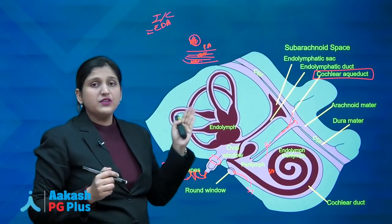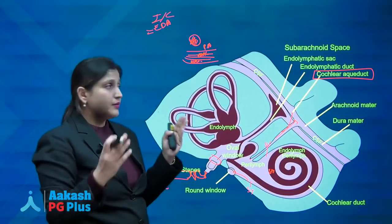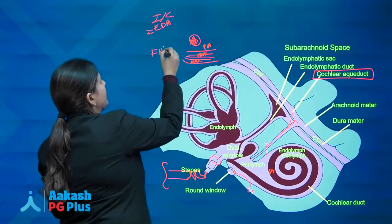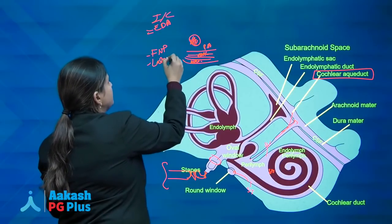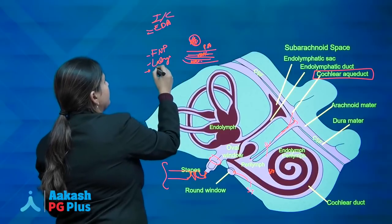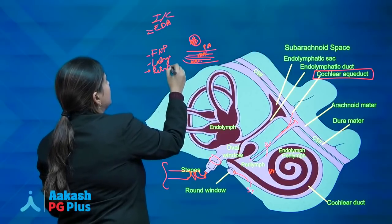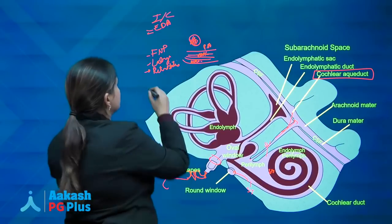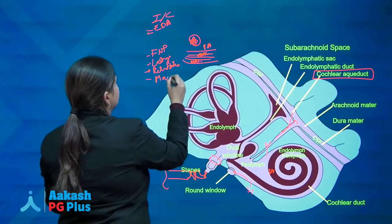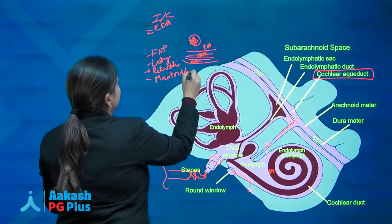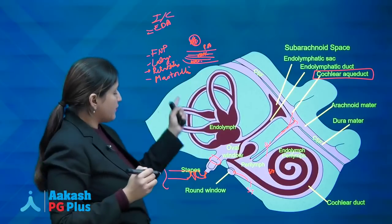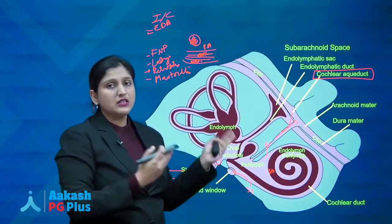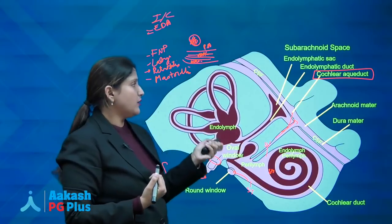Different complications present differently. Complications of the mastoid include facial nerve palsy, labyrinthitis, petrositis, and mastoiditis. Mastoiditis and Bezold's abscesses are abscesses present outside the temporal bone.